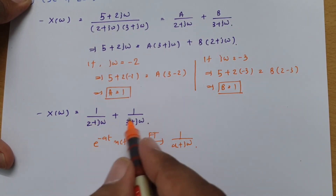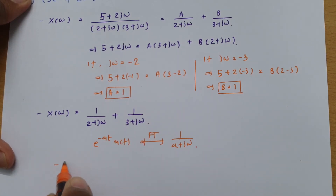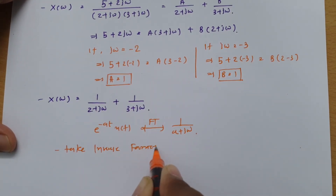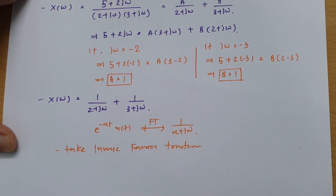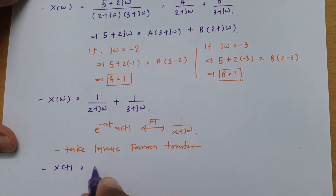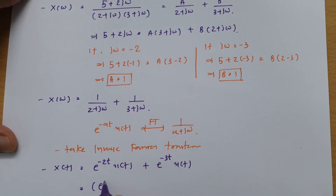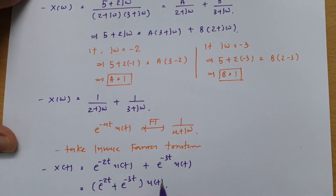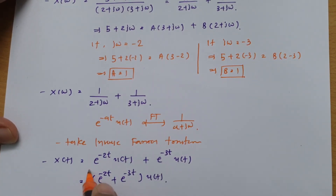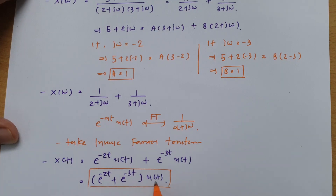Taking the inverse Fourier transform, we get x(t) = e^(−2t)u(t) + e^(−3t)u(t). So the final answer is x(t) = (e^(−2t) + e^(−3t)) · u(t).